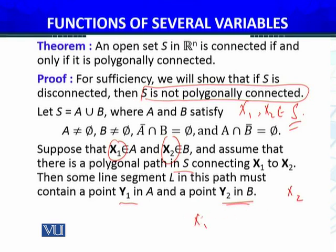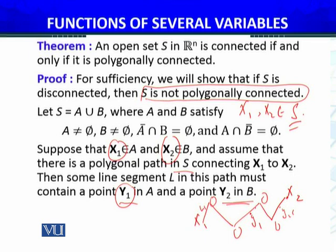In line segments, there must be a point Y₁ which is in A and a point Y₂ which is in B. We will definitely find this. The line segment X = tY₂ + (1-t)Y₁, 0 ≤ t ≤ 1. This line segment is part of L and therefore is in S. Now this line segment is part of the polygonal path and therefore will also be in S, because we have supposed that the polygonal path from X₁ to X₂ is contained in S.